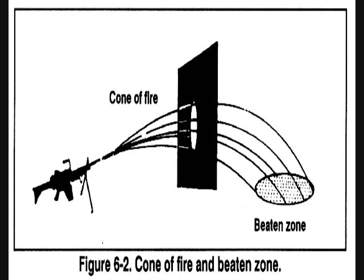C — cone of fire. When several rounds are fired in a burst from the M249 machine gun, each round takes a slightly different trajectory. The pattern these rounds form on the way to the target is called a cone of fire. This is caused primarily by vibration of the weapon and variations in ammunition and atmospheric conditions.